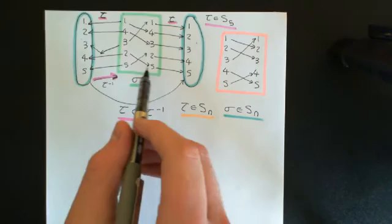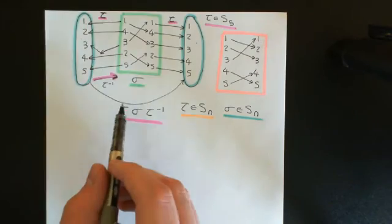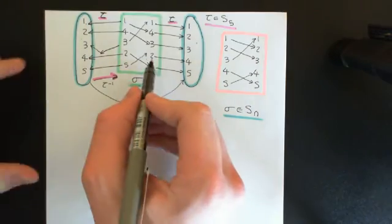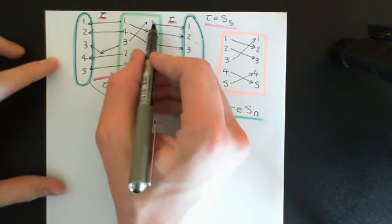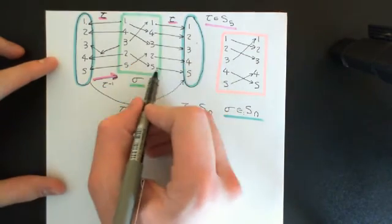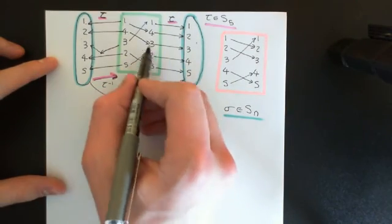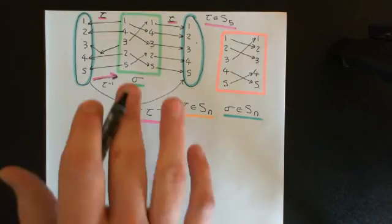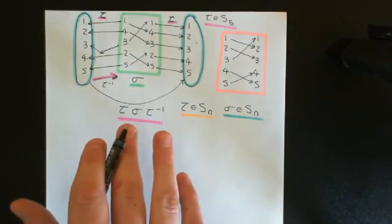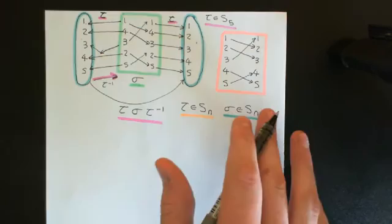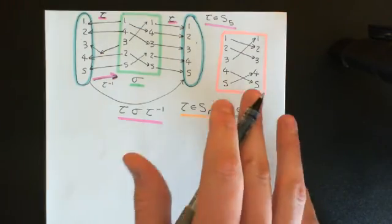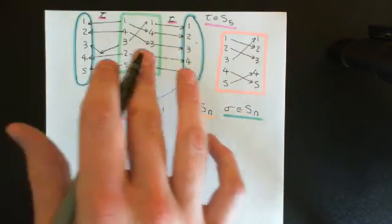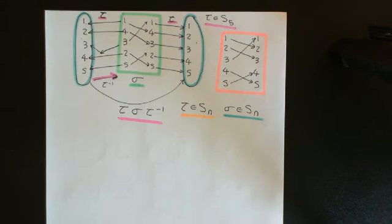In the example we did, here was our σ, and our τ was the mapping that just swapped two and four around. So you can see that τ kept one, three, and five the same but just swapped two and four. We conjugated σ by τ and ended up with this new mapping, which we can see very evidently is of the same cycle type as our σ.